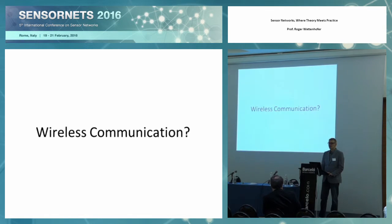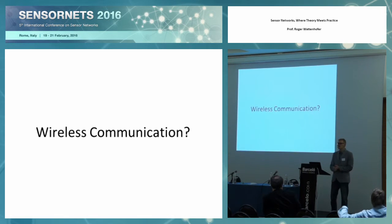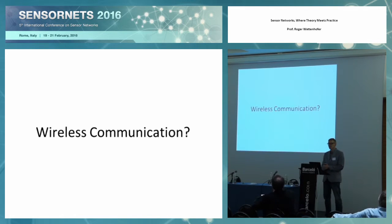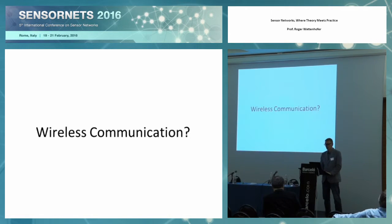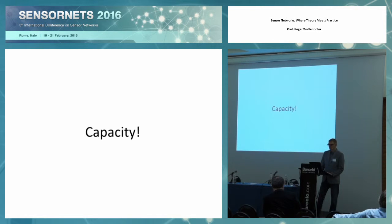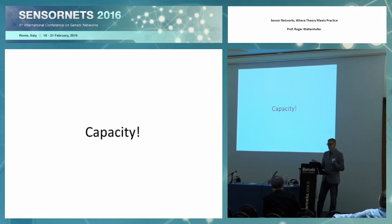I'm going to start out with just wireless communication. This is the basis of many things in sensor networks, and I'd like to explain some really interesting theoretical problems in wireless communication. In particular, I want to talk about so-called capacity — that's how many bits per bandwidth, per space, can you transmit?